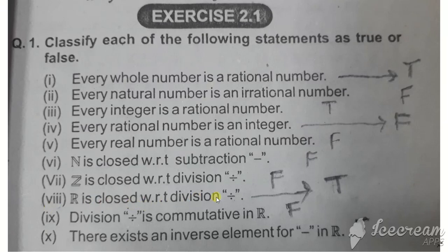Statement eight: R is closed with respect to division. Real numbers are closed with respect to division, but there is an exception. If you divide by zero, it is not defined. So real numbers are closed under division except for division by zero.